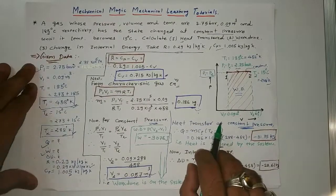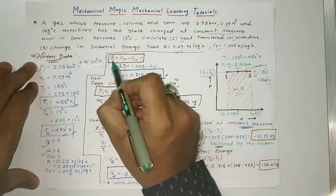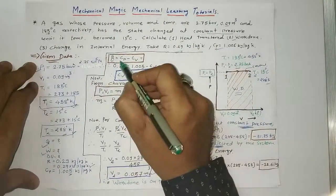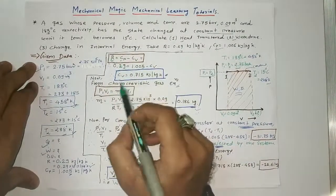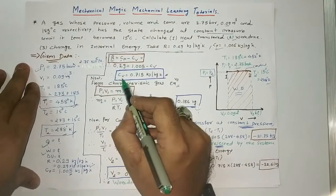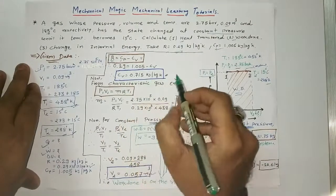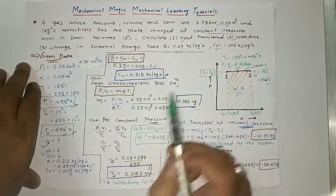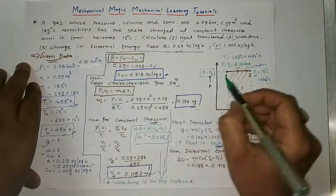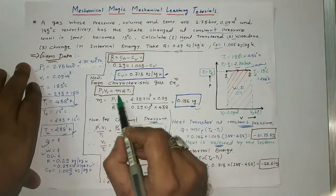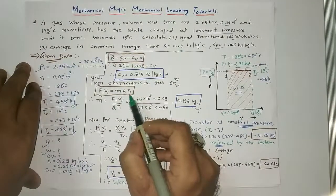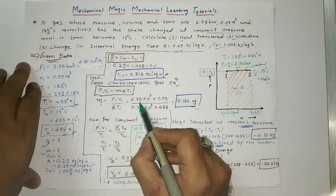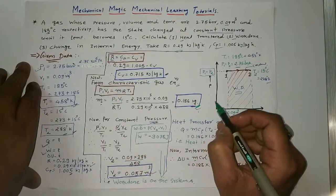Using the relation R equals Cp minus Cv, with the given value of R and Cp, we can find the specific heat at constant volume Cv, which equals 0.715 kilojoule per kg Kelvin. Applying the characteristic gas equation PV equals mRT at point 1: P1 V1 equals m R T1. Solving for mass m equals P1 V1 divided by R T1, giving m equal to 0.186 kg.